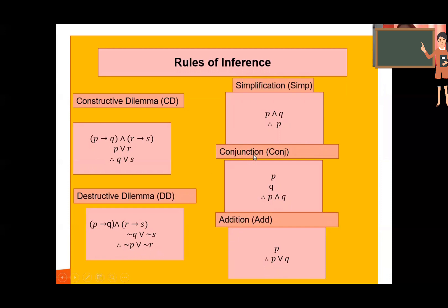Next we have simplification — this is a very simple one. P and Q, therefore P. And we have conjunction: you have P and you have Q, and then you can combine the conclusion — P, Q, therefore P and Q.